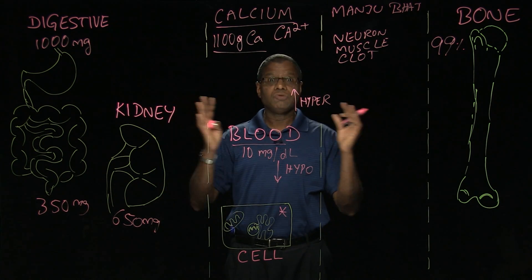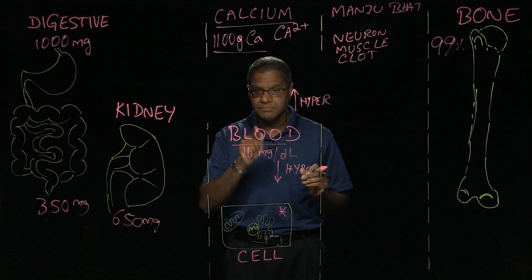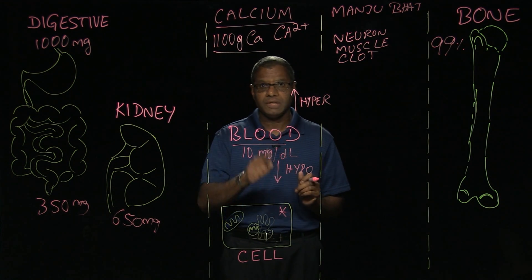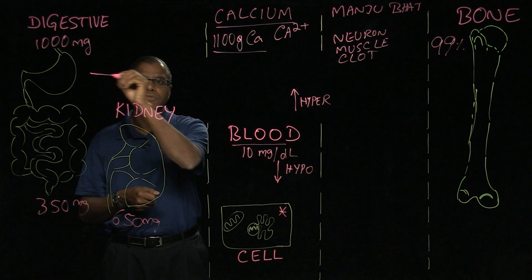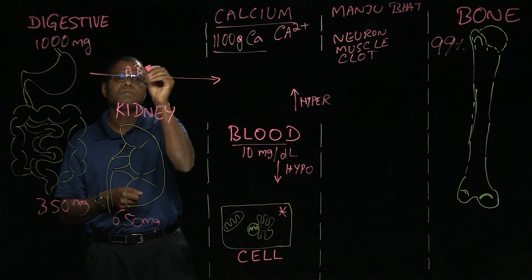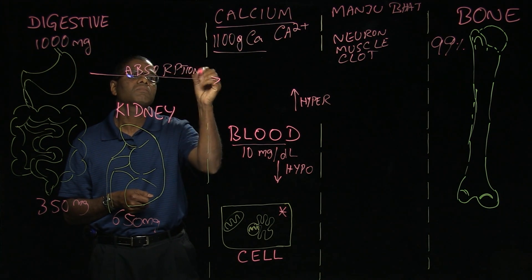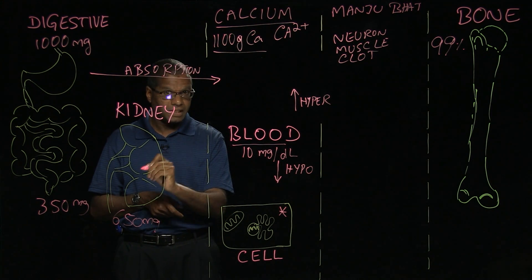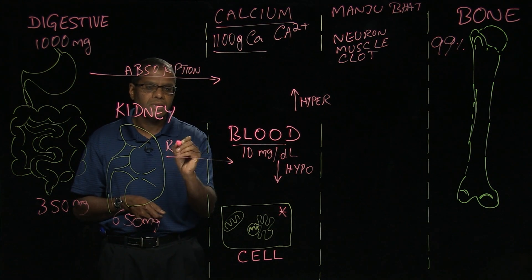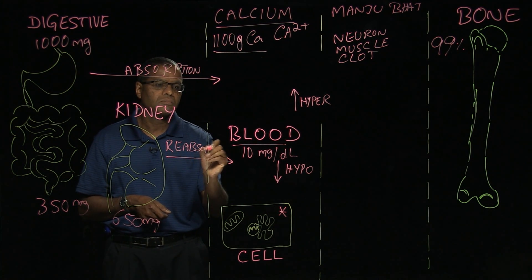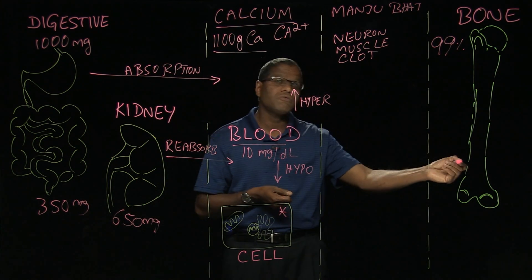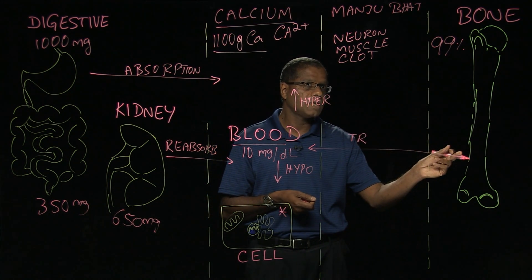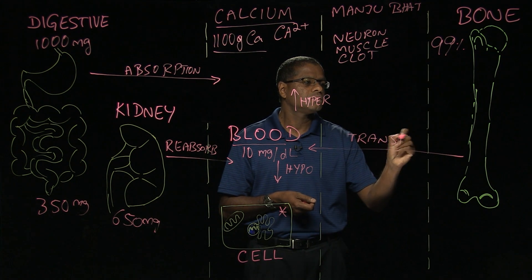To maintain calcium, we can either add calcium to the blood or remove it. In the case of hypocalcemia, one way is to increase absorption through the digestive system, or we can reduce filtration of calcium from the kidneys by reabsorbing calcium and adding it to the blood. Alternatively, we can dissolve the bone and transfer the dissolved calcium from the bone to the blood.